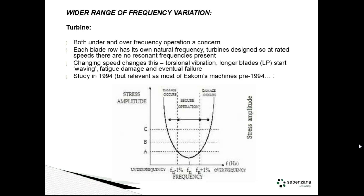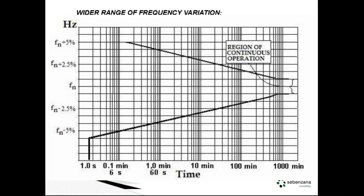We've talked about grid code discussions with the generator guys, electrical guys, the distribution networks — but are you talking to the turbine people as well? From that same study, continuous operation is only just under 1% either way. When you look at what the grid code is looking at — at 6% I think it was — I'd probably accept that for a second or so before you start having problems in the turbine. But these guys are talking 20 seconds or up to minutes. There are potential problems there.